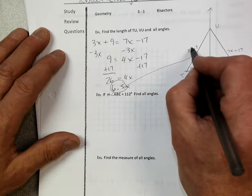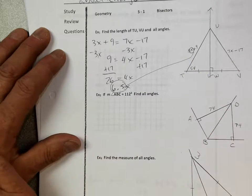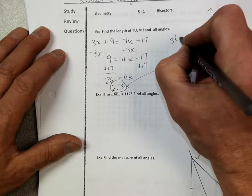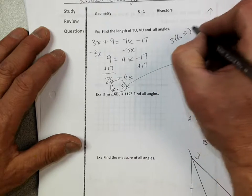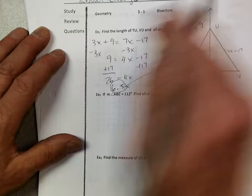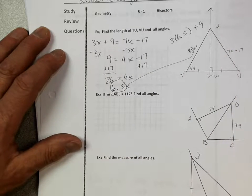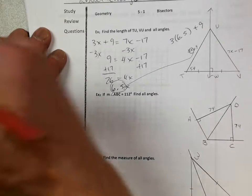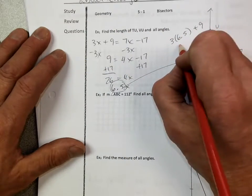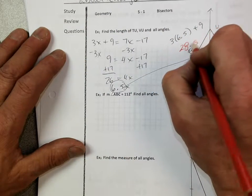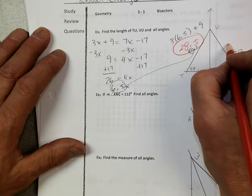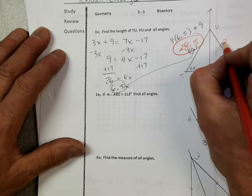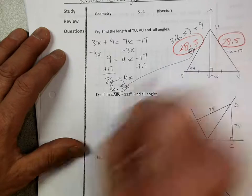So let's put 6.5 right in there. Sure, because that's what X equals. So 3 times 6.5 plus 9, I get a 28.5. And this side is also 28.5 because they're equal. I don't need to plug it in. They're equal, right? So 28.5.